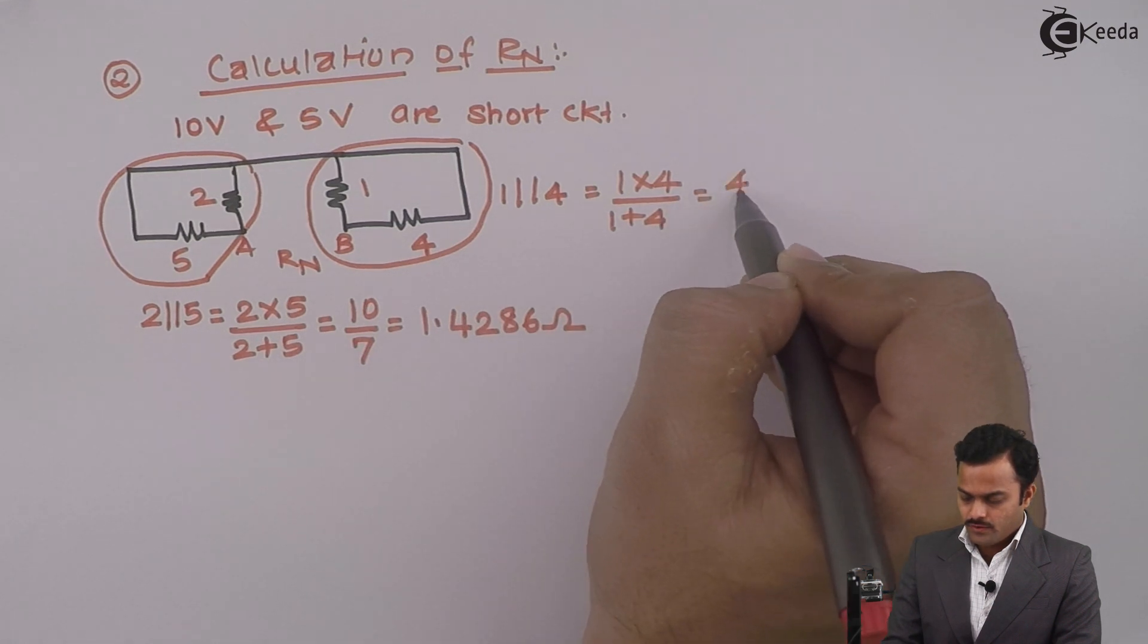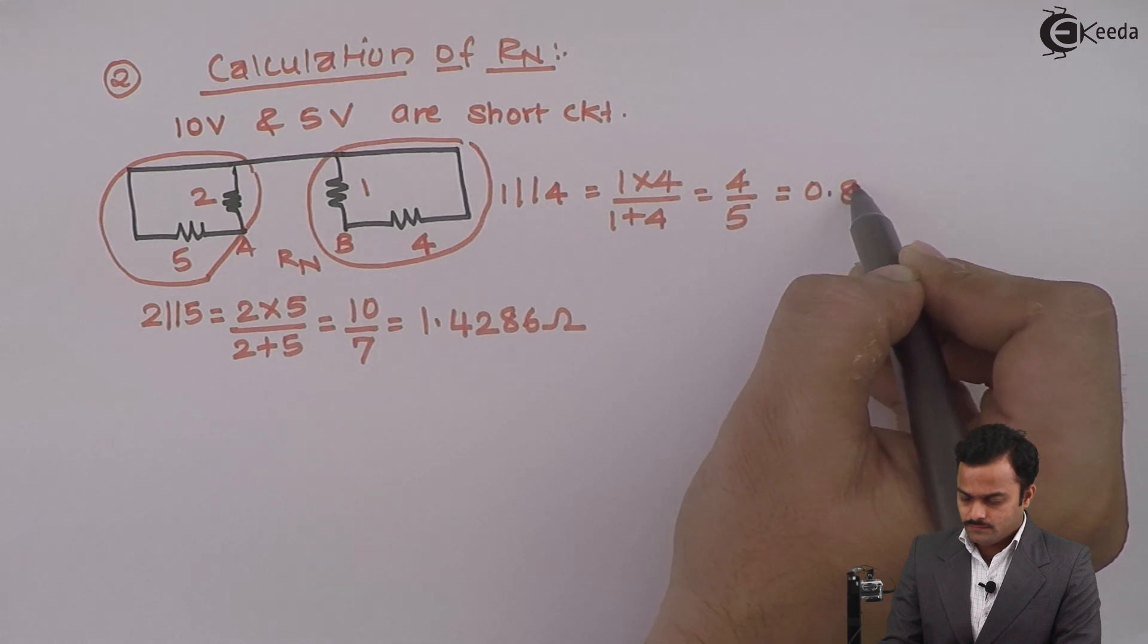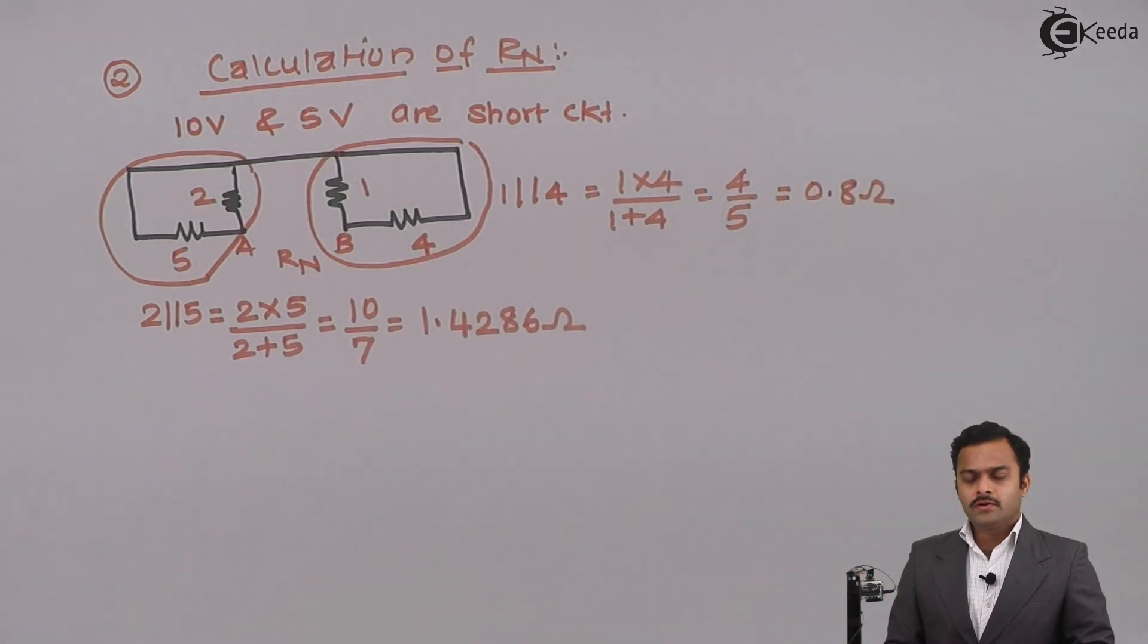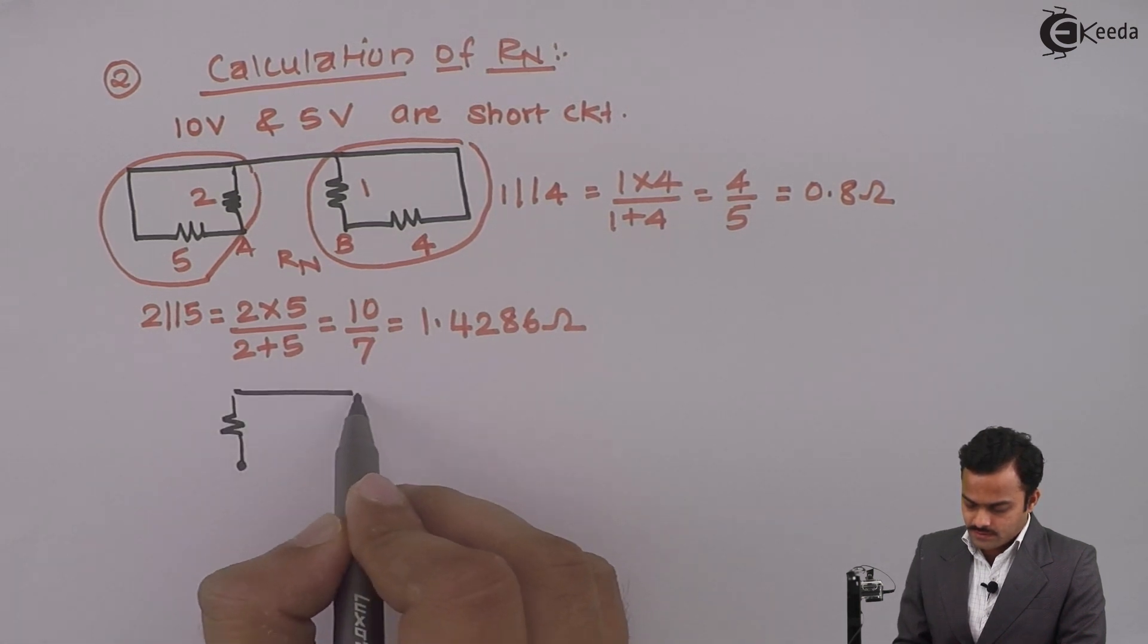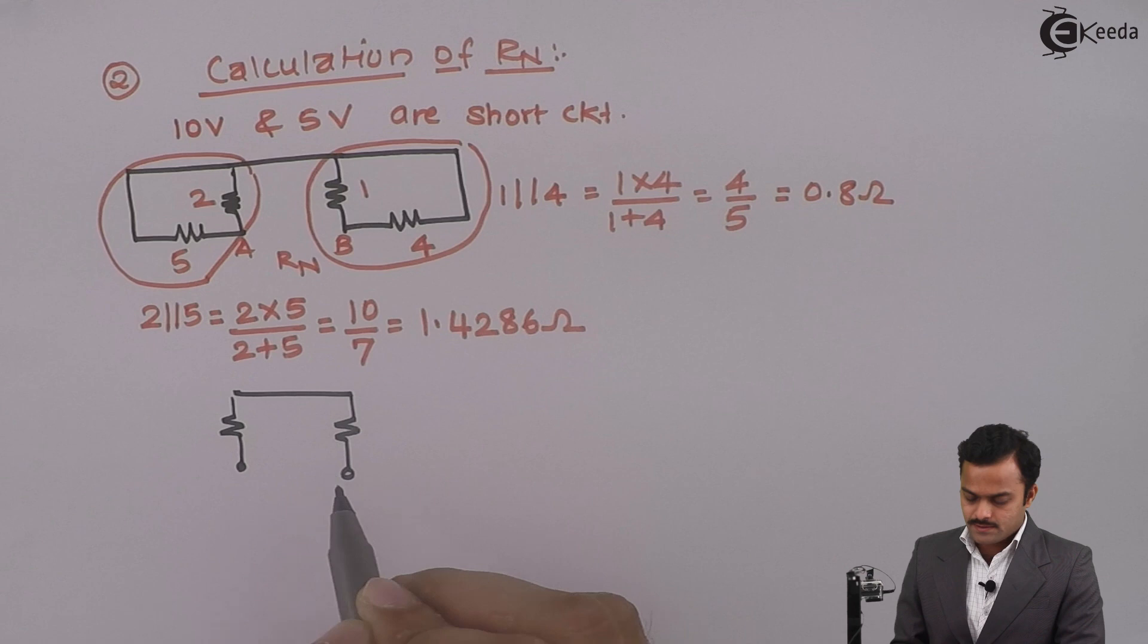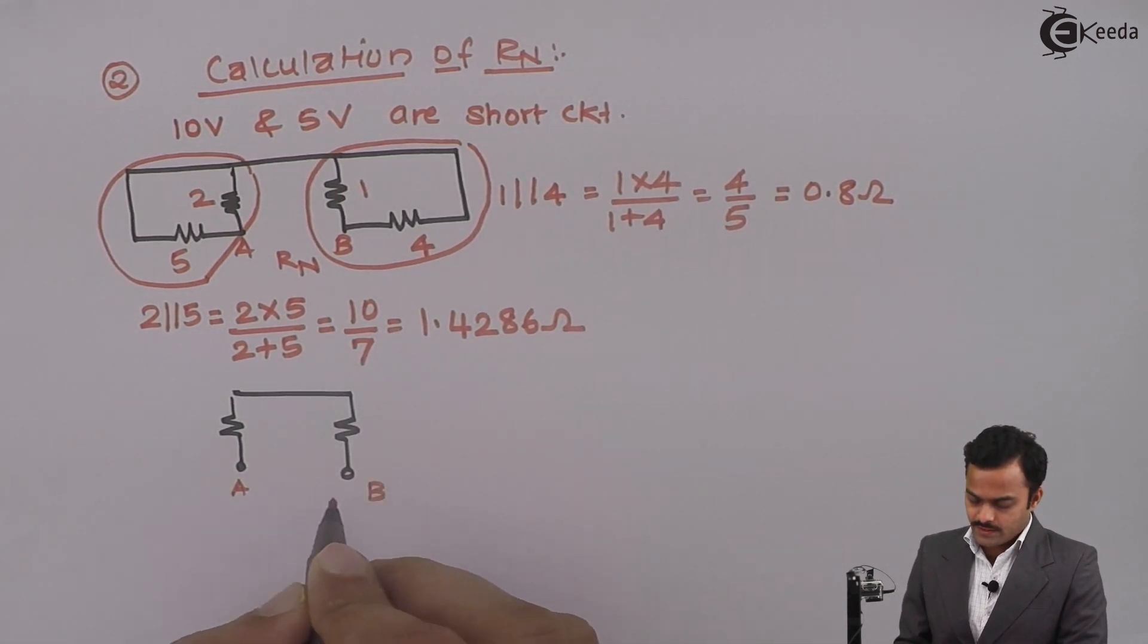So the answer is 1 into 4 divided by 1 plus 4, which is 4 divided by 5, 0.8 ohms. If I redraw the circuit, I will get two resistances connected in series which finally comes between points A and B.